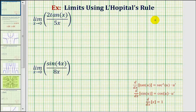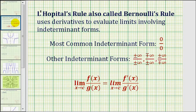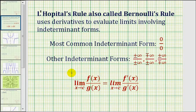Welcome to two examples of determining limits using L'Hôpital's rule. L'Hôpital's rule, also called Bernoulli's rule, uses derivatives to evaluate limits involving indeterminate forms. The most common indeterminate form is zero divided by zero, but there are also other indeterminate forms. L'Hôpital's rule states the limit as x approaches c of f(x) divided by g(x) equals the limit as x approaches c of f′(x) divided by g′(x), if this limit involves an indeterminate form.